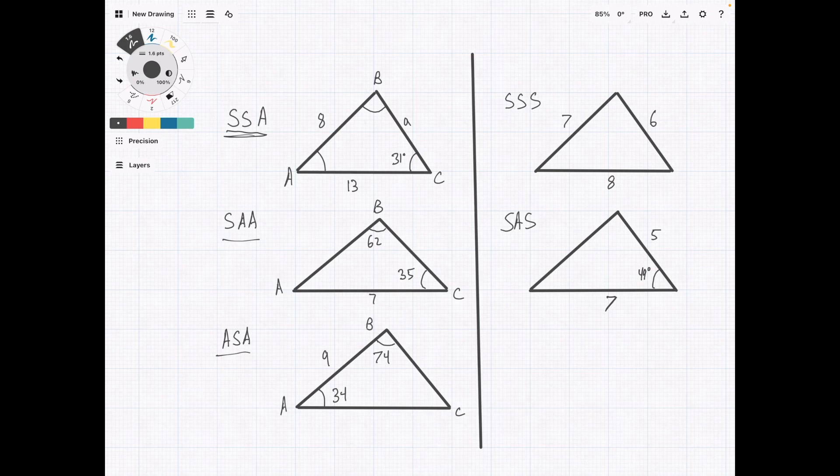The rule of thumb to figure out if you need law of sines or law of cosines is to see if you have an angle and side match. What do I mean by that? Basically, if you look at the first example, we have angle C and we have side C, the side across from an angle. So if we have both of these things, this is law of sines.